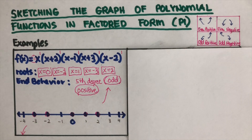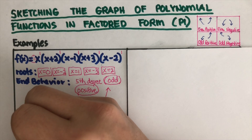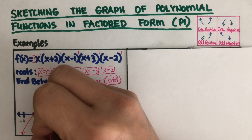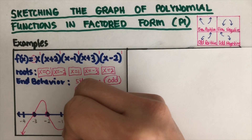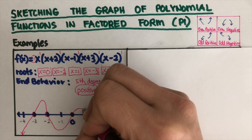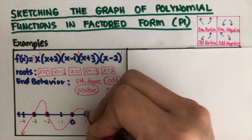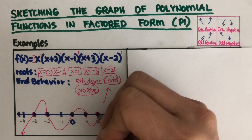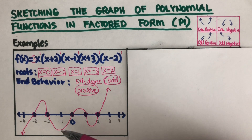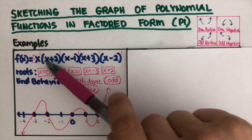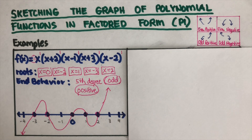Now we're ready to sketch the graph. We go up this way, then down, then up this way, then up again, and that completes the graph. This is the sketch of this polynomial function in factored form — an example of an odd positive.